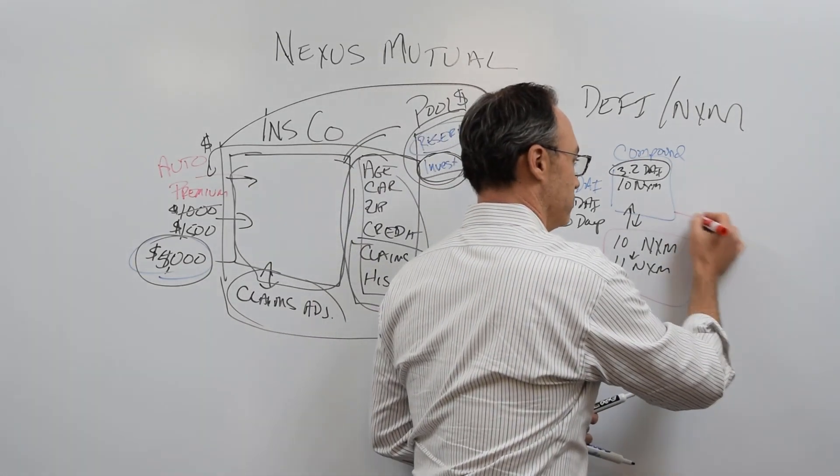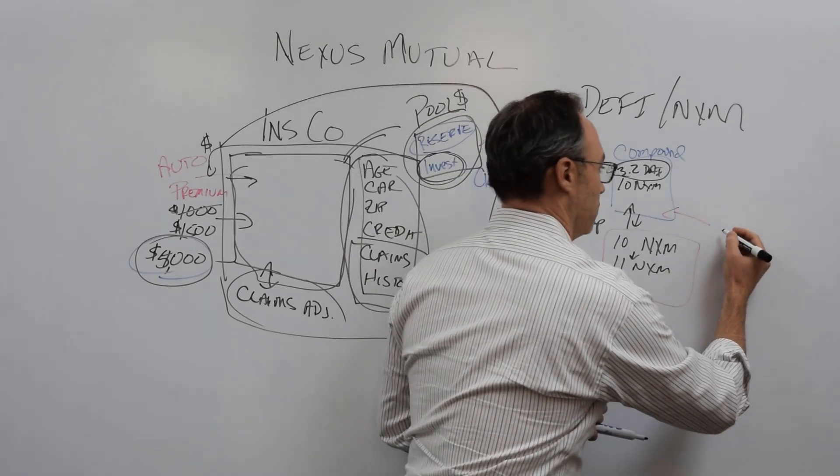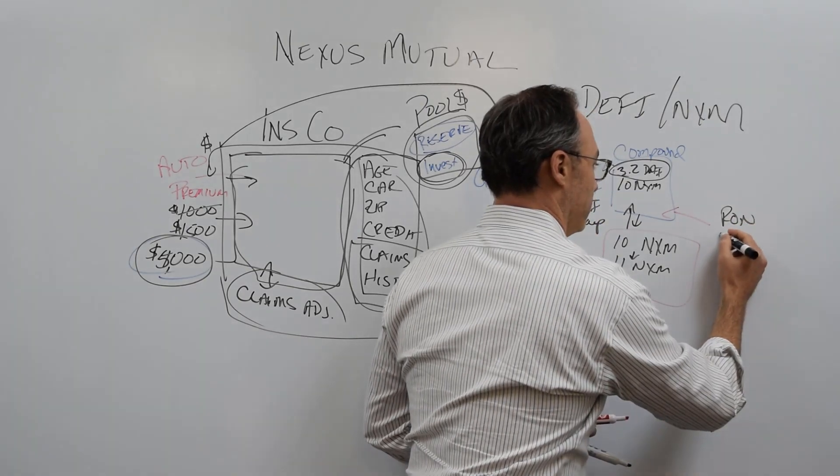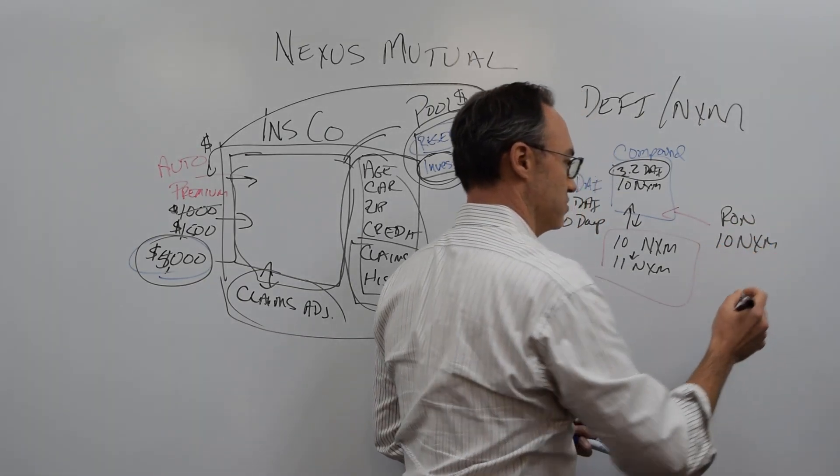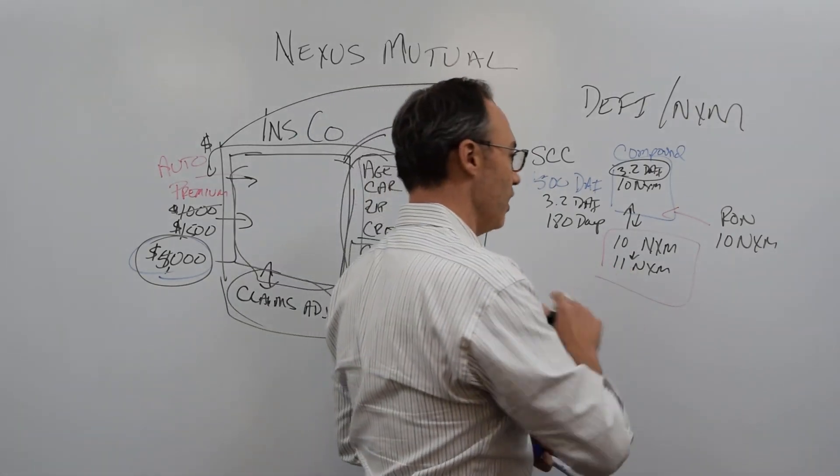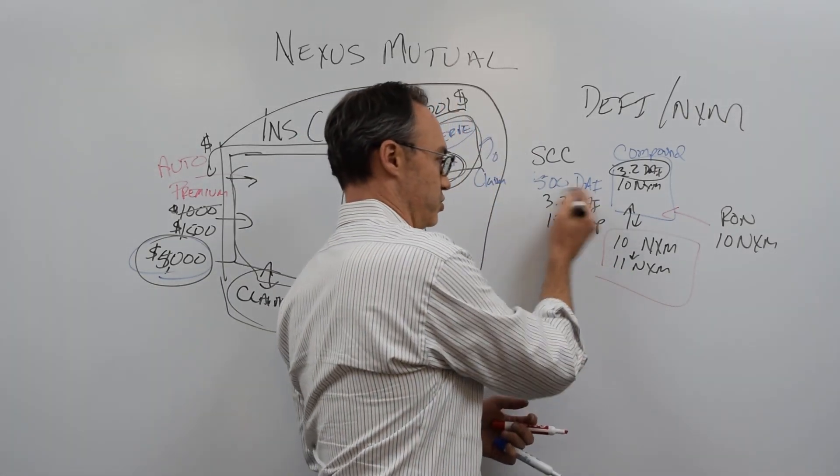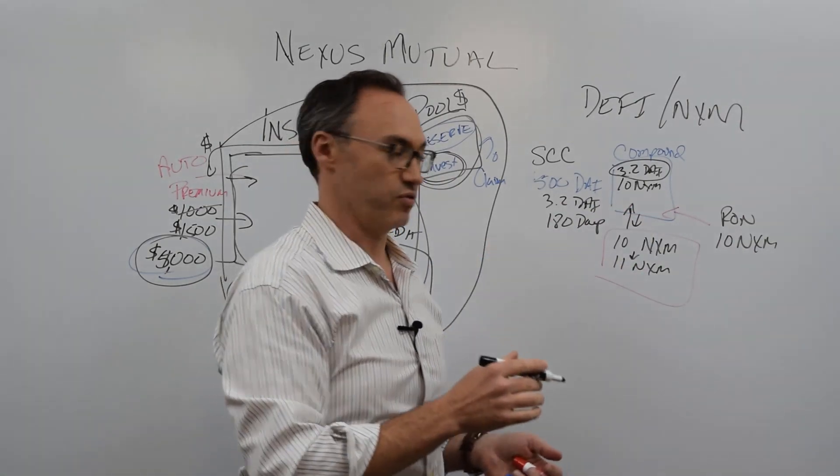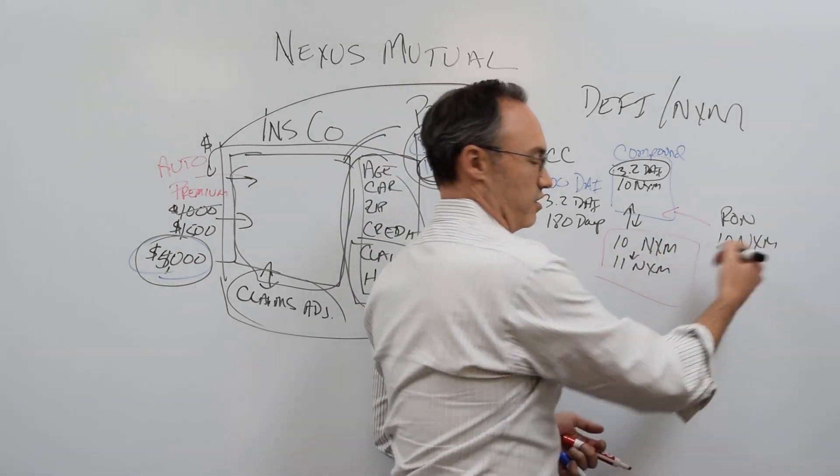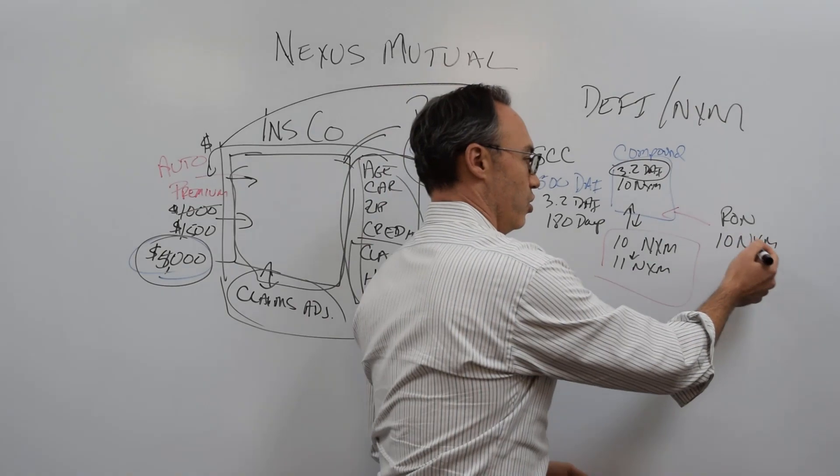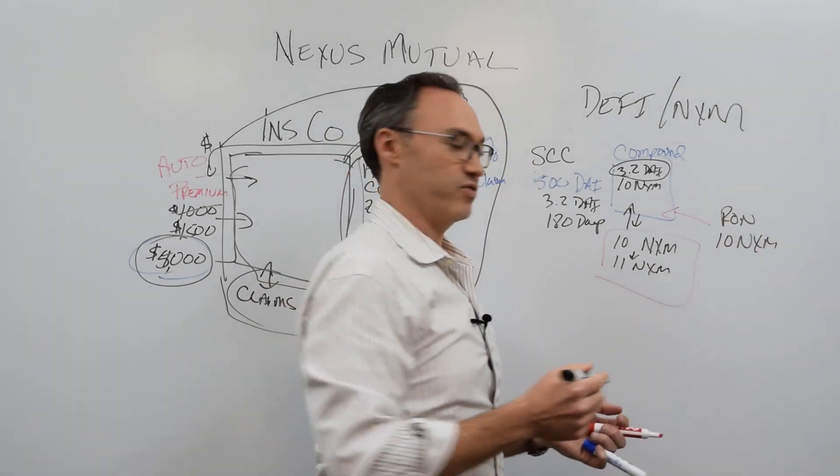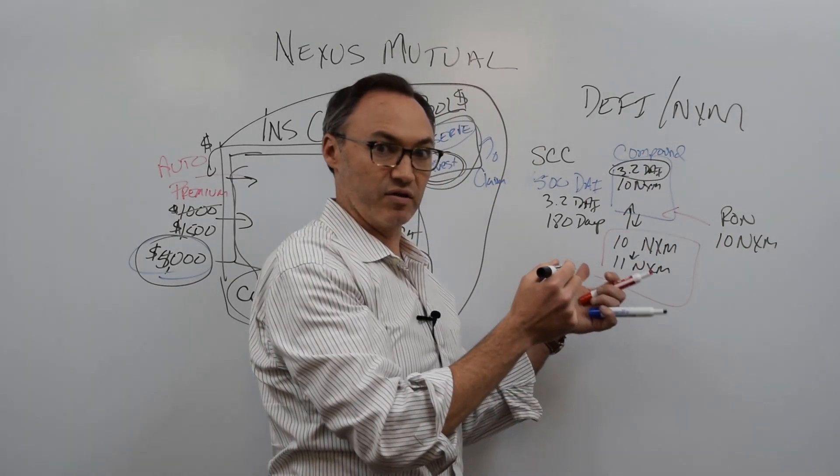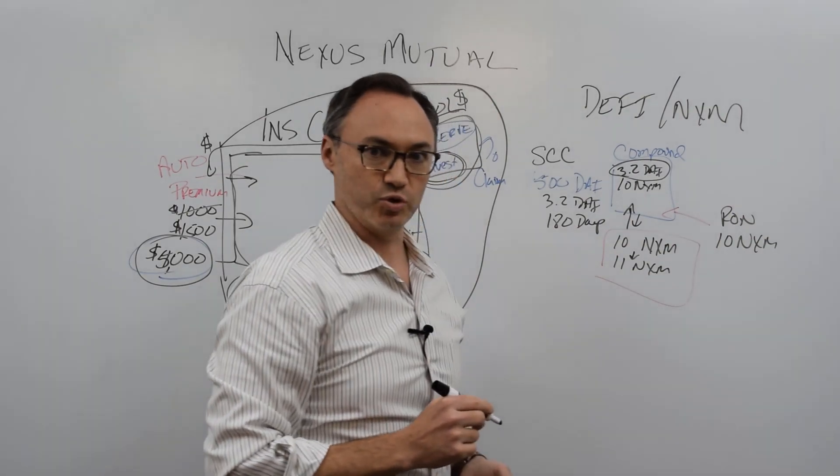Now, if there is a claim, if this is hacked, if someone gets into the smart contract, not if someone gets into my particular wallet, but if someone actually does get into the Compound smart contract, now you have a whole other system which is the claims people. So Ron might take his 10 Nexus Mutual tokens and say, I'm going to be part of the claims process. I've potentially filed a claim. I've said, hey, someone swiped my 500 DAI from my account, sent them to their own wallet. I file a claim. Ron and several other claims assessors might come in here and go, look, we're going to take our money and we're going to evaluate this.